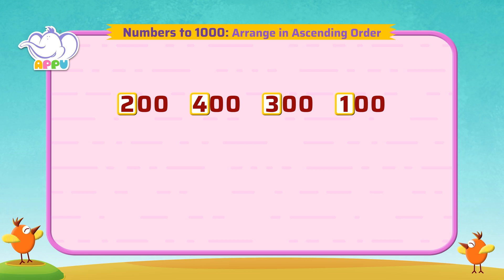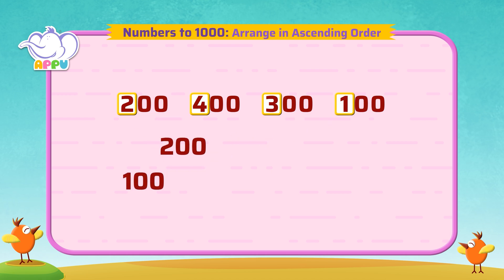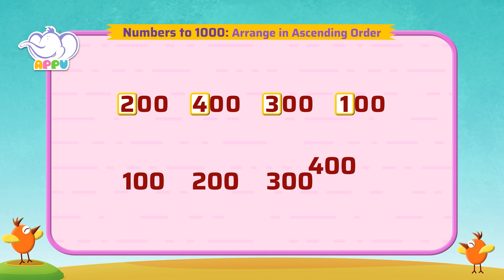Now we arrange the numbers from smallest to biggest. Since 1 is smaller than 2, and 2 is smaller than 3, and 3 is smaller than 4, the smallest number is 100, then 200, then 300, then comes 400. The answer is 100, 200, 300, 400.